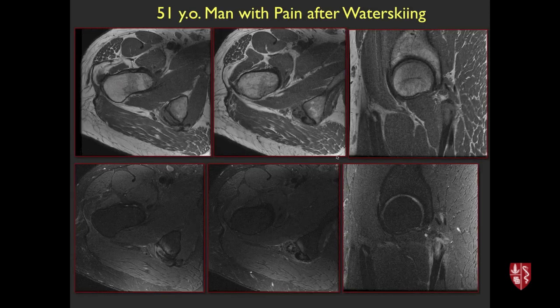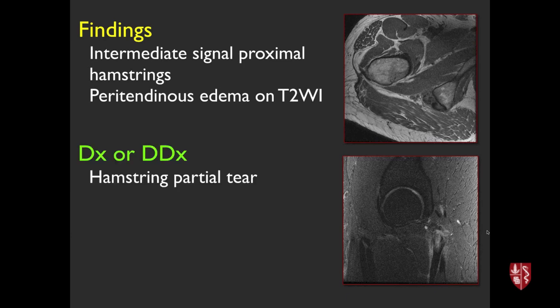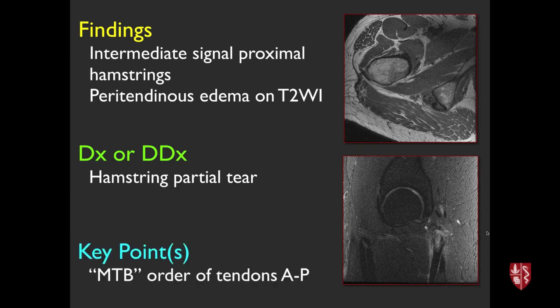51-year-old man with pain after water skiing. MRI shows intermediate signal and edema in the proximal hamstrings — they should be uniformly dark. This is a partial tear of the proximal hamstrings. The order of the tendons can be remembered as MTB: semimembranosus, semitendinosus, and biceps. This case appears to involve more of the semimembranosus component.